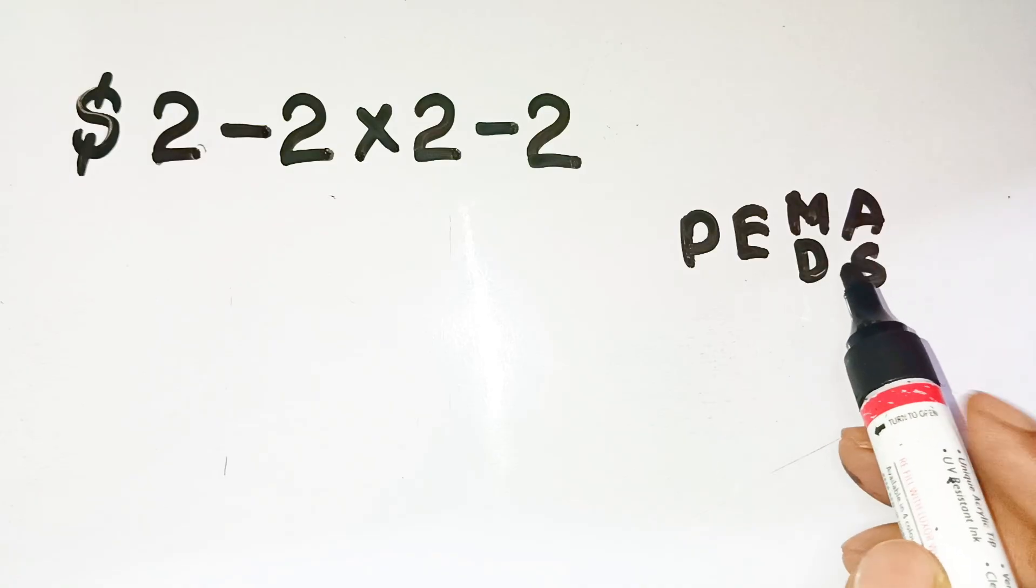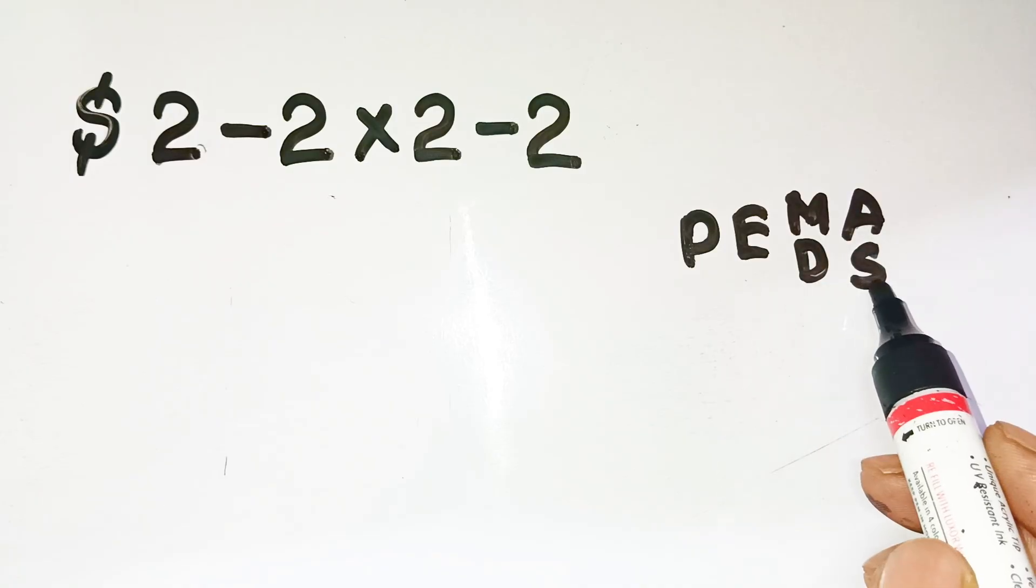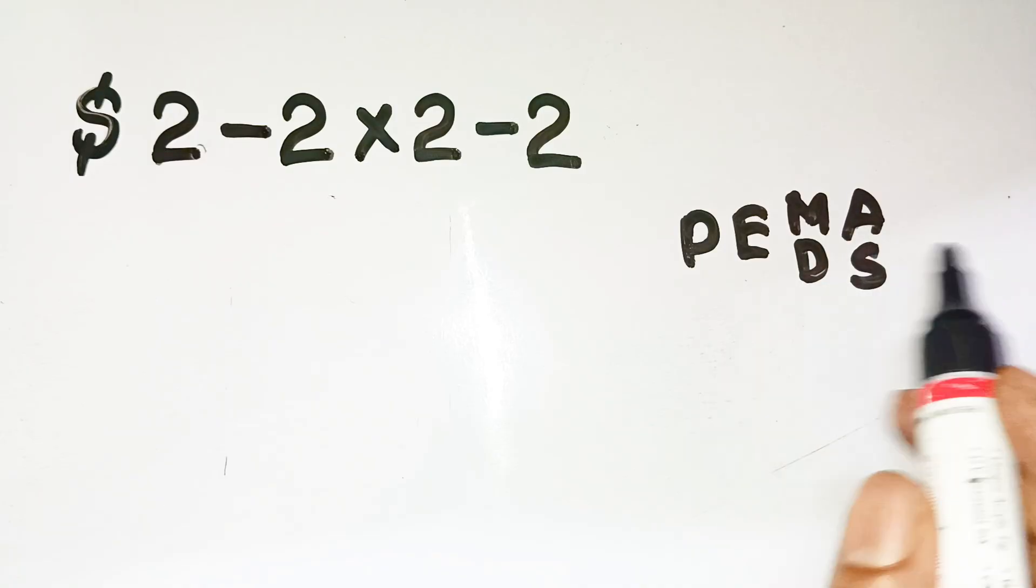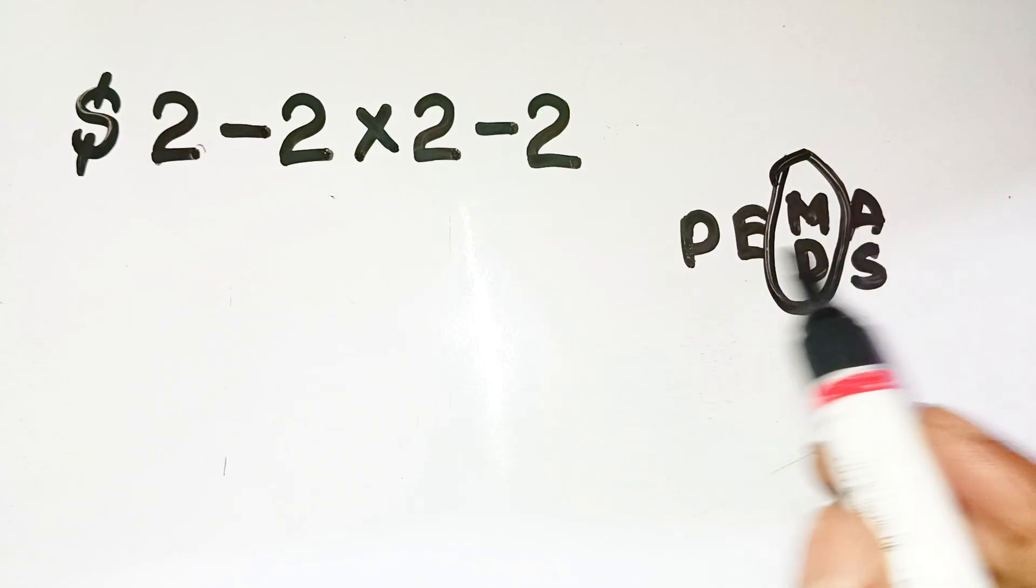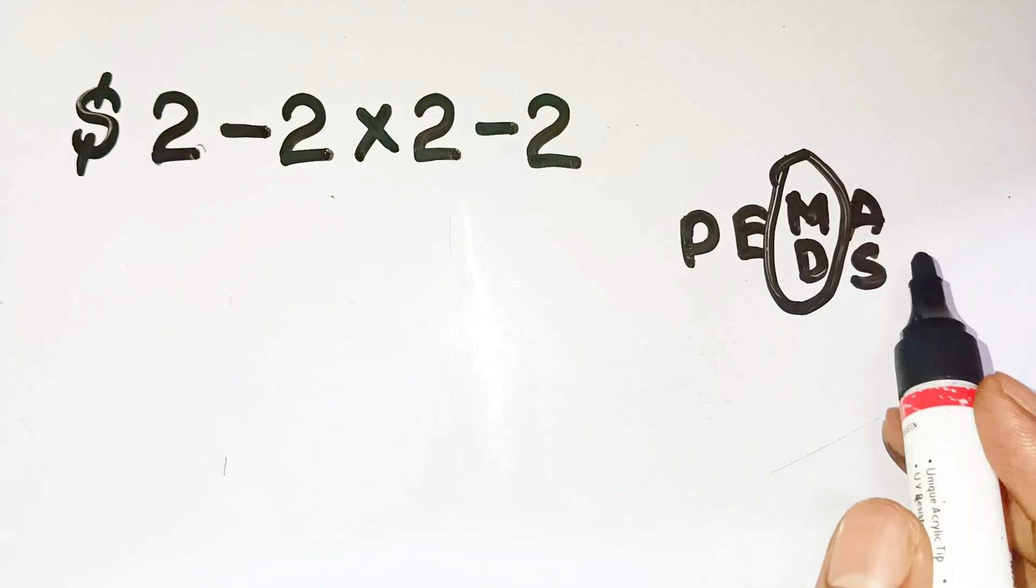exponents, multiplication, division, addition, and subtraction. And here's the golden rule. Multiplication and division always come before addition and subtraction, moving left to right.